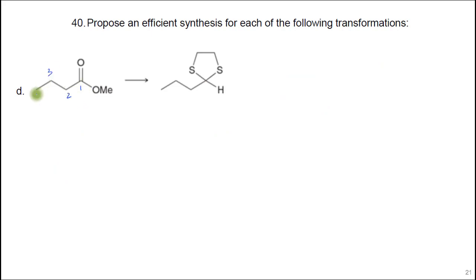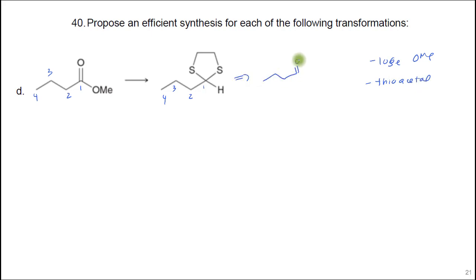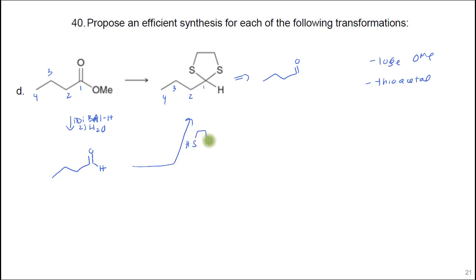In this problem, we lose the methoxy and form a thioacetal. This came from the aldehyde, which we can get from the ester using DIBAL — that makes the aldehyde. Then to get to the thioacetal, it's the same thing: use the dithiol with two carbons in between.